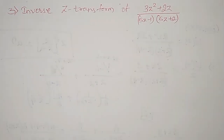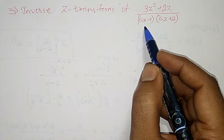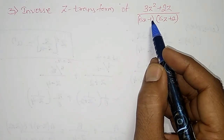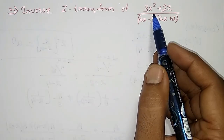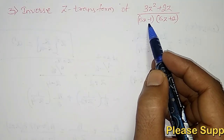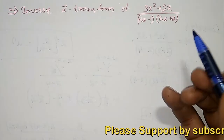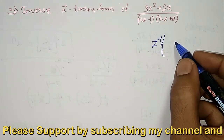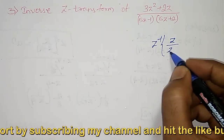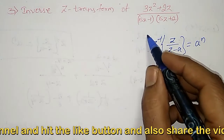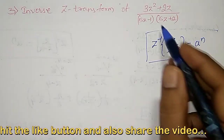In this video, I am going to find the inverse Z-transform of (3Z² + 2Z) divided by (5Z minus 1) into (5Z plus 2). The numerator contains the term Z and the denominator contains linear factors 5Z minus 1 and 5Z plus 2. Our standard formula is: inverse Z-transform of Z divided by (Z minus A) equals A to the power n. I can use this formula, but I have to convert the denominator into Z minus A type.